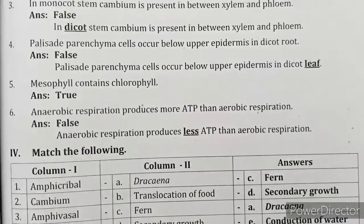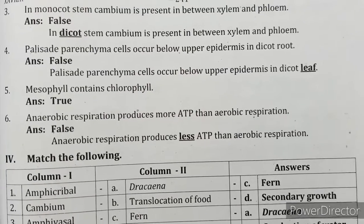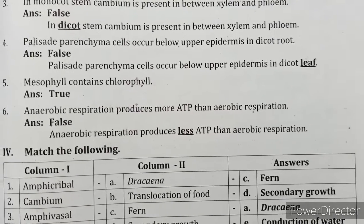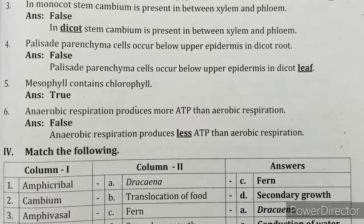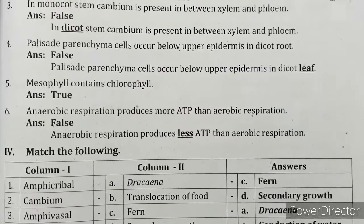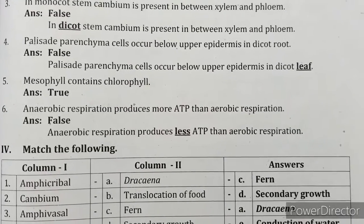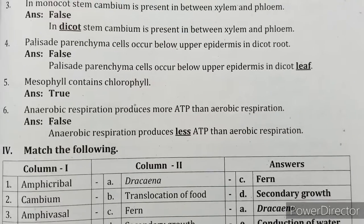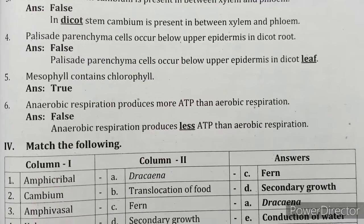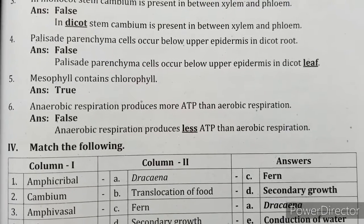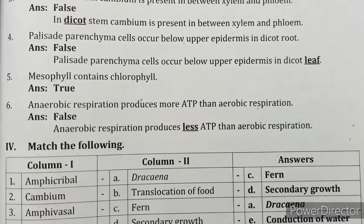In monocot stem, cambium is present in between xylem and phloem — False; in dicot stem, cambium is present in between xylem and phloem. Palisade parenchyma cells occur below the upper epidermis in a dicot leaf — True. Anaerobic respiration produces more ATP than aerobic respiration — False; anaerobic respiration produces less ATP than aerobic respiration.